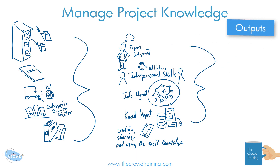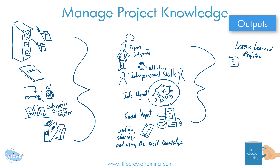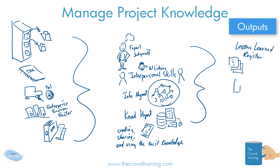For outputs, we should have some kind of lessons learned register to capture what we've learned. That register could be in a digitized format, but it could also be paper-based, presentations, or whatever else. As we capture this knowledge, we should be updating the project management plans. And if we're finding new templates, new systems, or new ways to capture information, those Organizational Process Assets should also be updated — we'll draw our binder updated on the side. Maybe we've learned better ways to do things, or things have gotten better system-wide across other projects.